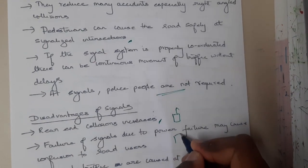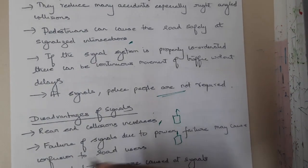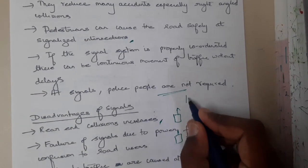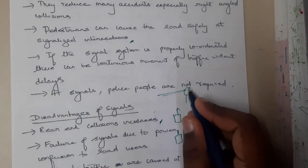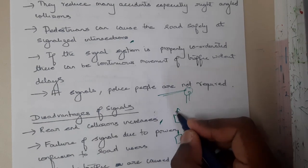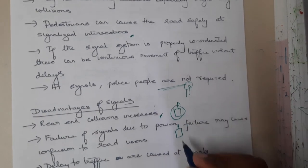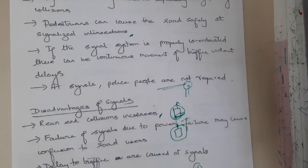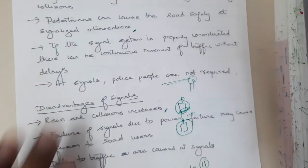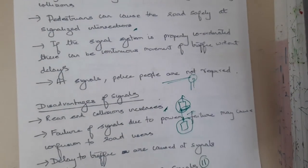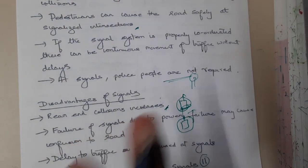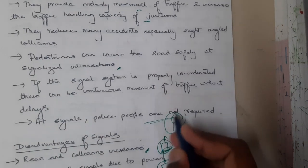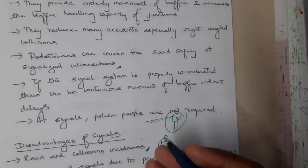The disadvantages: rear-end collisions will increase. If a vehicle is going at high speed and another vehicle is following at the same speed, and suddenly the light changes to red — the first vehicle manages to stop but the second one doesn't and hits the first from behind. This type of collision, hitting one vehicle from the back, is called a rear-end collision.